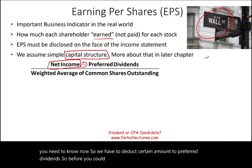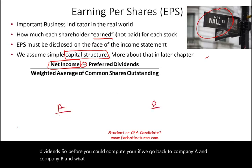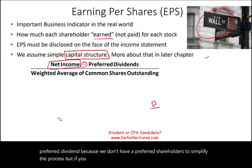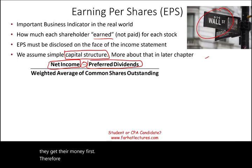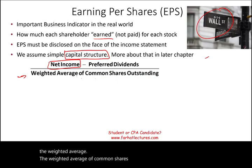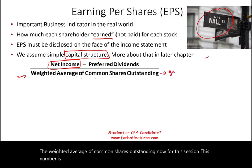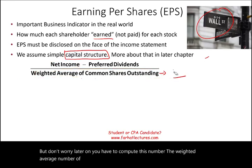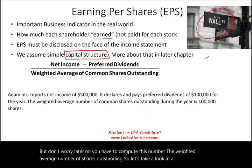Going back to our Company A and B example, I assumed zero preferred dividends to simplify. But if you have preferred shareholders, they get their money first — so we deduct their share of earnings before distributing to common shareholders. Then we divide by the weighted average number of common shares outstanding. For this session, that number is given, but later you'll have to compute it yourself.